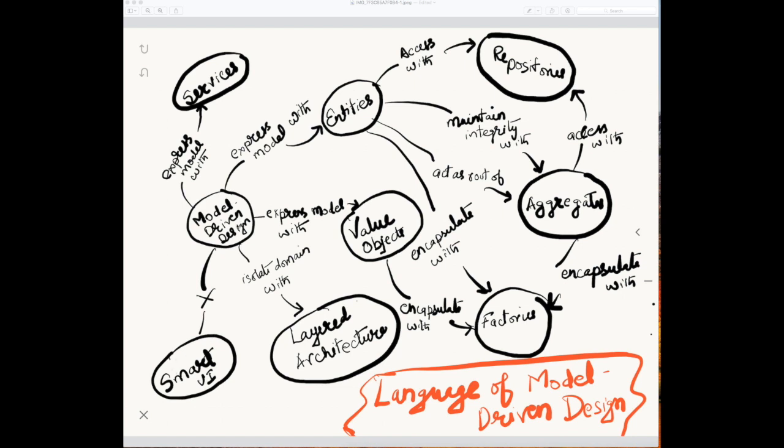A good way of doing model driven design is to isolate with layered architecture. When we talk about layered architecture, have the web layer, business layer, data layer, so that our domain logic is pure - it's not corrupted with UI concerns or data access concerns.